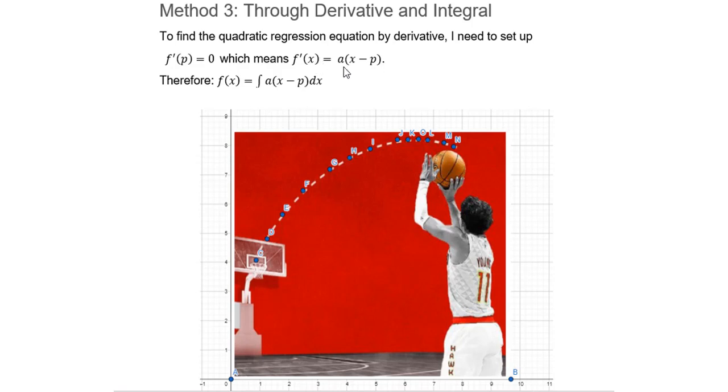Therefore I can write down a(x - p) for the derivative of f(x). Therefore we can get f by doing the integral of a(x - p)dx.